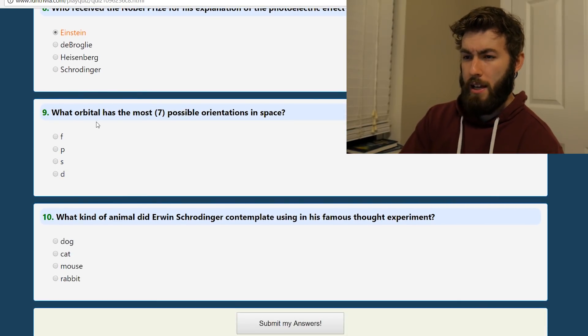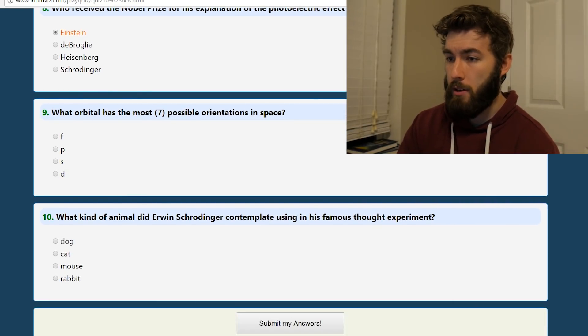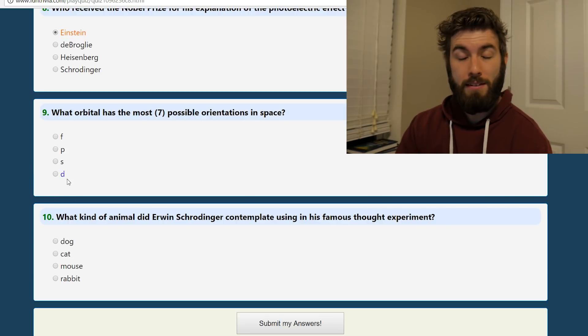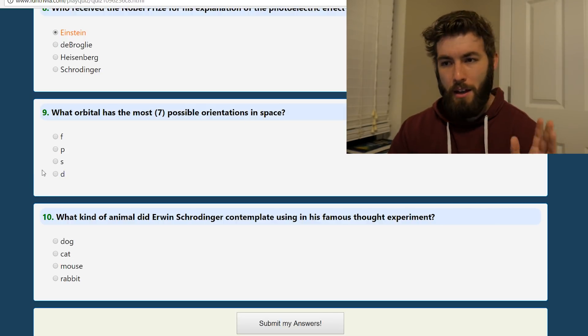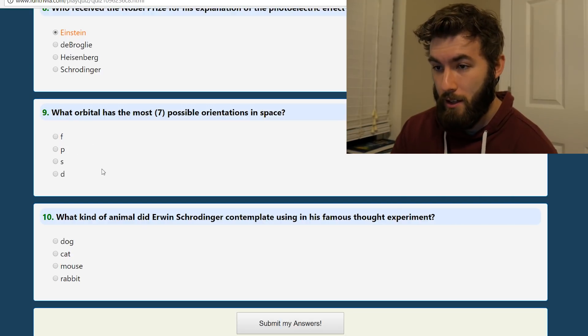What orbital has the most seven possible orientations in space? I only know this because of that stupid, that's not stupid, that was mean, the atomic physics class that I took. And that would be F.